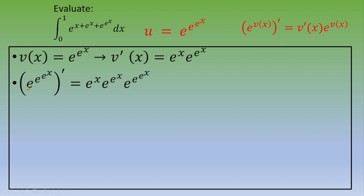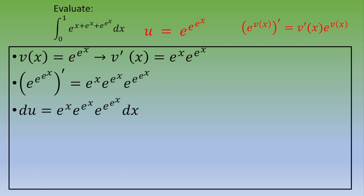So the derivative of e to the e to the e to the x equals e to the e to the x times e to the e to the e to the x dx. This quantity is non-negative and different from zero, so we can divide and we obtain dx equals du over e to the x times e to the e to the x times e to the e to the e to the x.